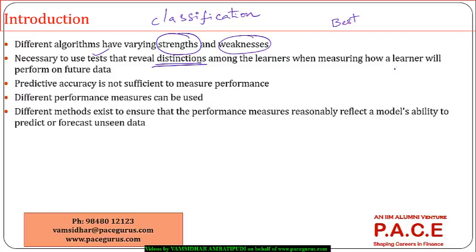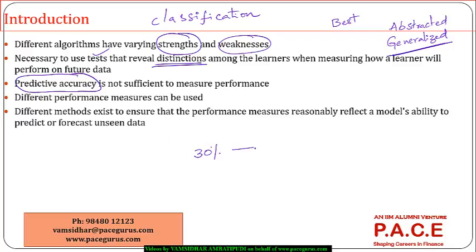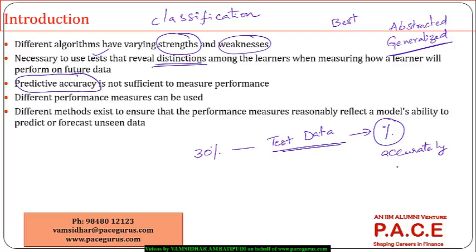To what extent has each of these learning algorithms really abstracted the learning process, and how well have they generalized so that, given new data, they can really perform the best? We really need some kind of testing mechanism to address that. We have been using predictive accuracy — taking 30% of the total data as the test data and seeing what proportion of the total test data is accurately predicted. The higher that proportion, the more we rely on that model. It is a good way, but may not be a sufficient measure of performance.